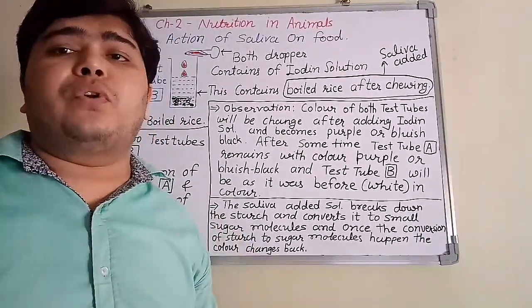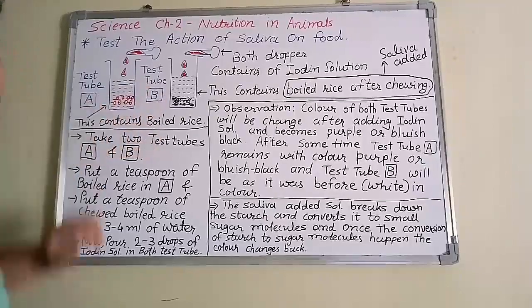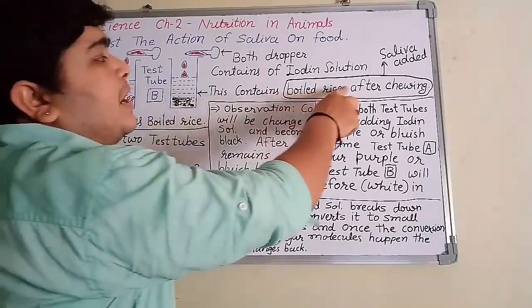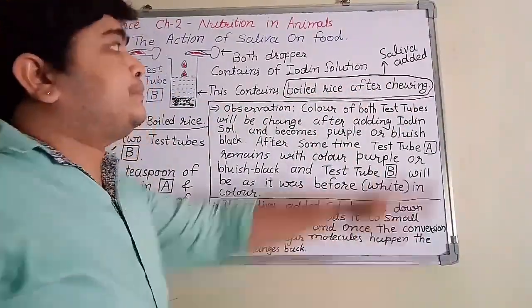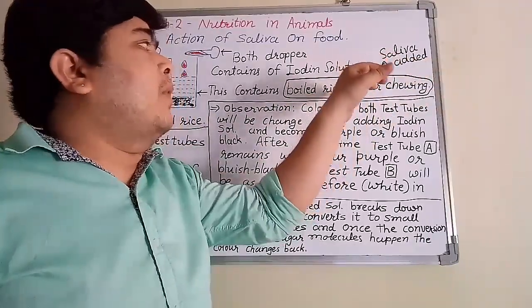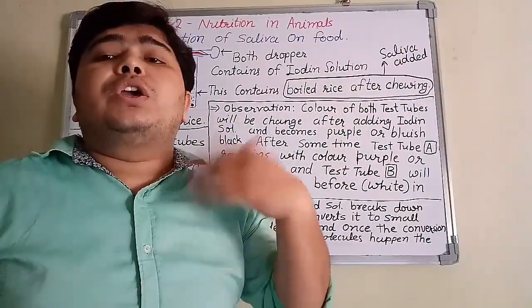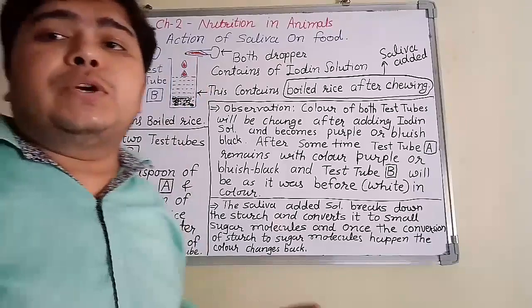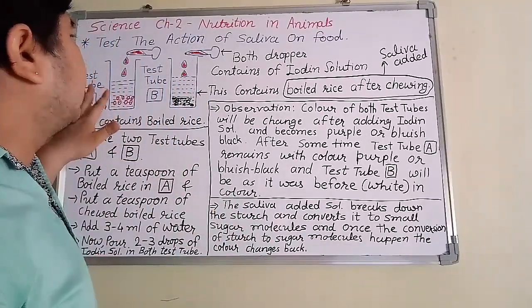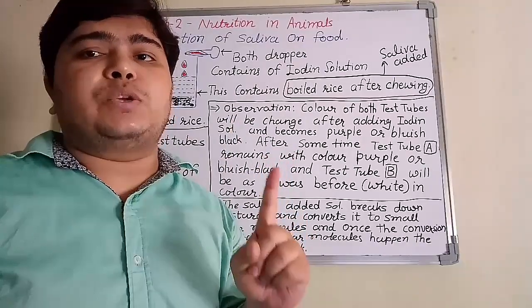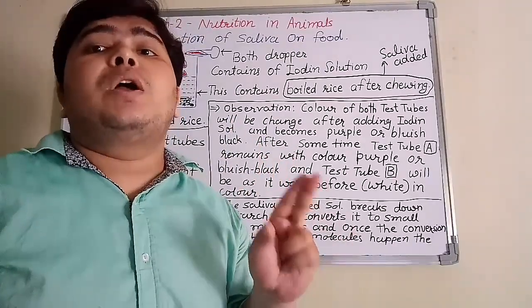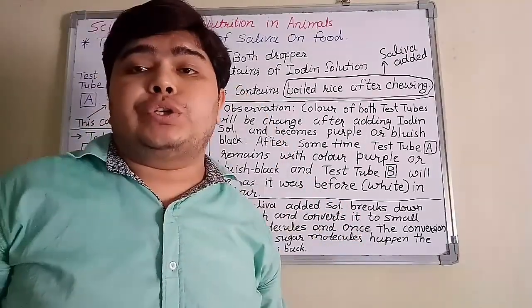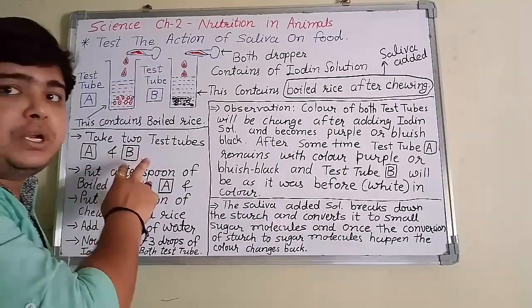Here you can see two test tubes. One contains boiled rice and another contains boiled rice after chewing — that means saliva has been added. Once you chew your food, saliva gets mixed in. Both droppers contain iodine solution. Test tube A contains boiled rice and test tube B contains boiled rice mixed with saliva.